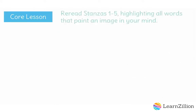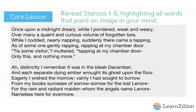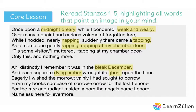I am going to reread stanzas 1 through 5 and highlight all words that paint an image in my mind. We are only going to highlight words in stanzas 1 and 2 on the screen, but you will continue to highlight all words that paint an image in your mind for stanzas 3 through 5 using the same model. It's okay if you highlight more words than are seen on the screen. I am going to highlight: midnight dreary, weak and weary, napping, tapping, rapping at my chamber door, bleak December, dying ember, ghost, books, and angels.